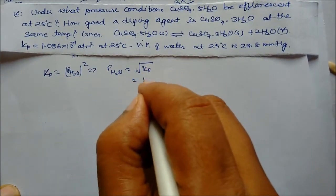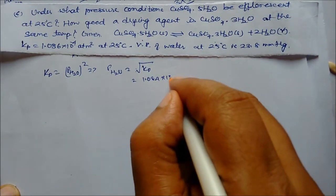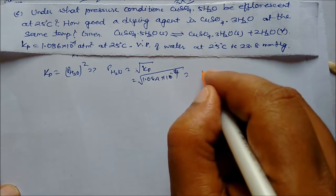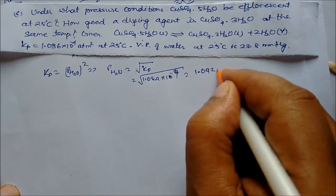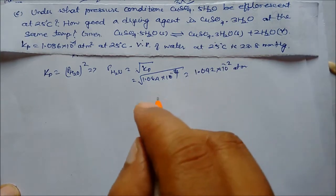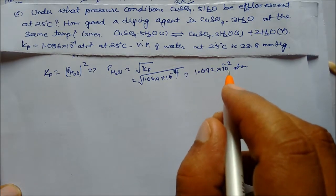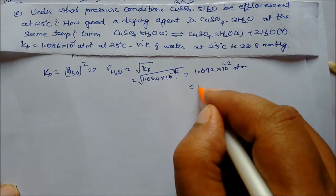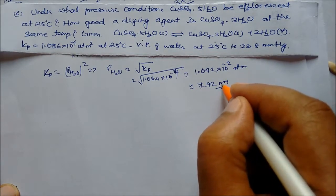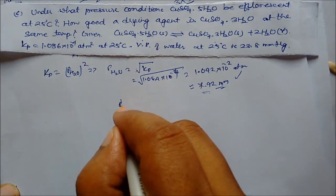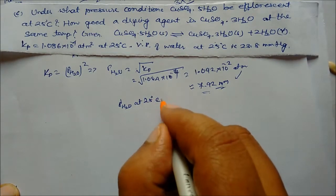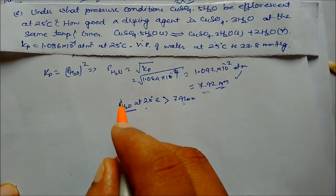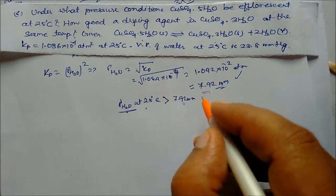Solving, partial pressure of water = 1.042 × 10⁻² atm, which converts to 7.92 mmHg. For efflorescence to occur, the partial pressure of water in the surroundings must be less than 7.92 mmHg; for it to act as a drying agent, the atmospheric water pressure must be greater than 7.92 mmHg so the reaction proceeds backward.